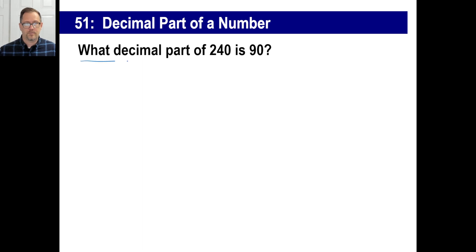So what decimal? Just x. Of 240 times 240 is 90 equals 90. I don't like how that looks. So I'm going to put 240x is 90.